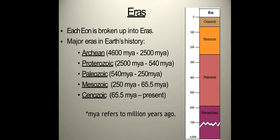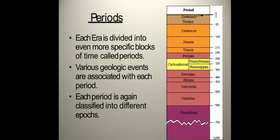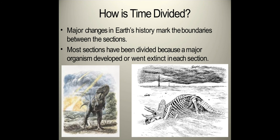A geologic era is a subdivision of geologic time that divides an eon into smaller units of time. Each eon is broken up into eras. Here are some of the major eras in Earth's history: first, the Archean; second, Proterozoic; third, Paleozoic; fourth, Mesozoic; and fifth, the Cenozoic. A geologic period is one of the several subdivisions of geologic time enabling cross-referencing of rocks and geologic events from place to place. Each era is divided into more specific blocks of time called periods, and each period is classified into different epochs.